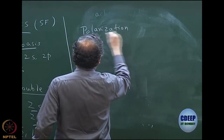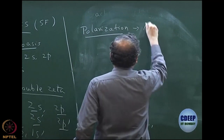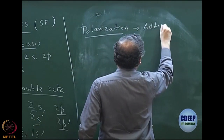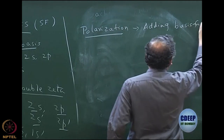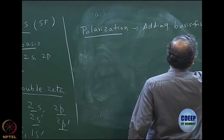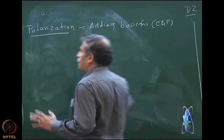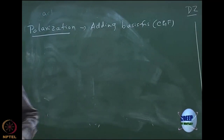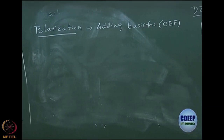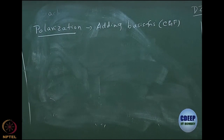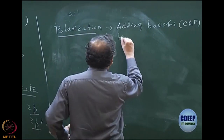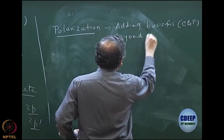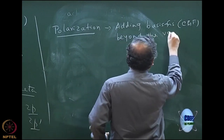So what is polarization? This is adding basis functions — first of course to the contracted functions. When I say basis functions, it means Slater or CGF. Please read Slater for CGF because they are identical; it is just that we are not actually using Slater. It is a contracted Gaussian. So, adding more basis functions beyond the valence angular momentum.